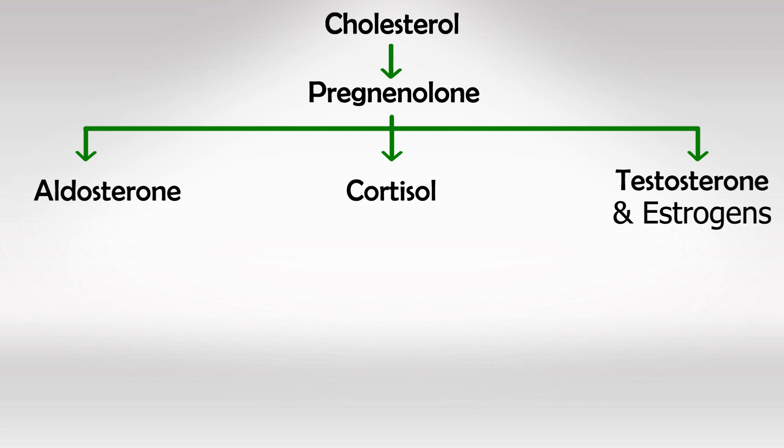For example, if somebody is having a lot of physical stress like infections, we need a lot of cortisol, so the pathway is mainly targeted towards the middle. And if someone is going through puberty, the pathway is mainly targeted toward the right, towards making more and more sex hormones.